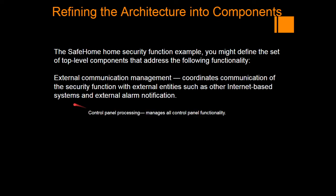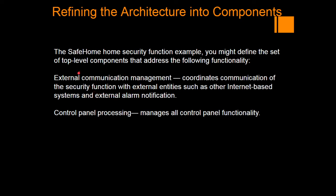Here we will see some top-level components. One is external communication management. In the home safety system, communications are received from the sensor with all the signals, and the alarm or alert is given to the output system. The communication between the systems is internet-based, getting input and passing information to the output system. They are called external communication management — one component that communicates data between the home safety system, which is the target system, and the external subsystems.